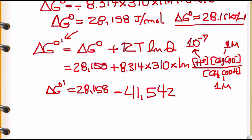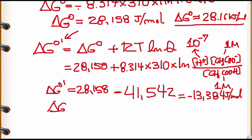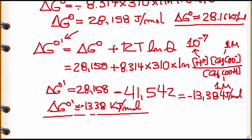Therefore ΔG°' = 28,158 − 41,542 = approximately −13,384 J/mol, or about −13.38 kJ/mol. The negative sign is very important: it tells us that under biochemical standard conditions this reaction is spontaneous, whereas under chemical standard conditions it was non-spontaneous. That's the key difference between ΔG° and ΔG°'.